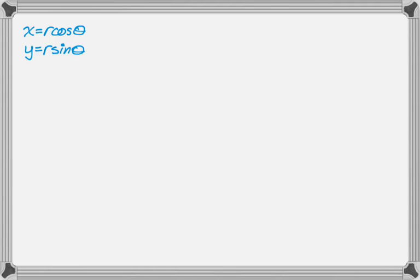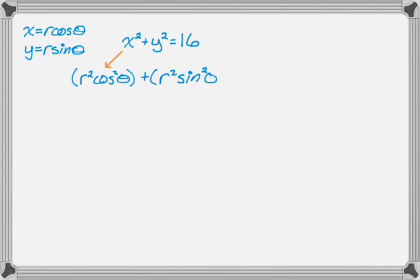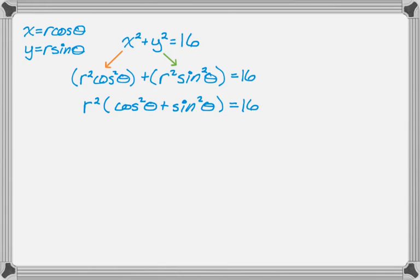Let's look at one centered at the origin. We need to remember that x equals r cosine theta and y equals r sine theta. Starting with x squared plus y squared equals 16, we replace x with r cosine and y with r sine and square them out, getting r squared cosine squared theta plus r squared sine squared theta equals 16. Factoring gives us r squared times (cosine squared plus sine squared), which equals 1, so r squared equals 16, and we reduce that to r equals 4.